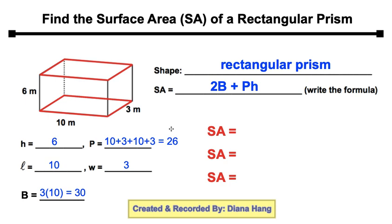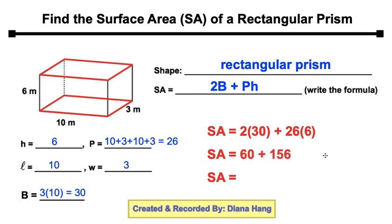Now we're going to apply this formula and substitute the values: 2 times capital B, which is 30, plus the perimeter, which is 26, times H, which is 6. Let's do our calculations and find the sum. This rectangular prism has a surface area of 216 meters squared.